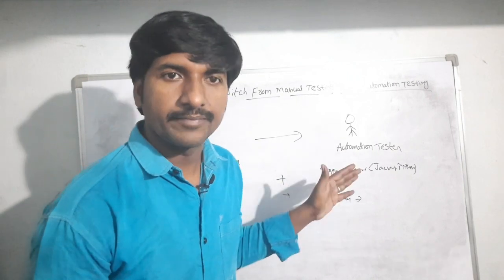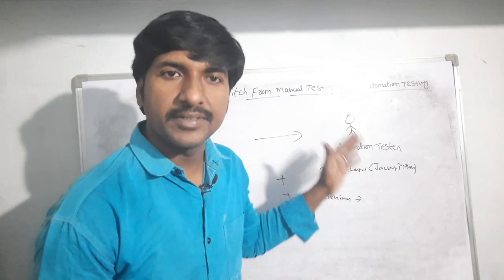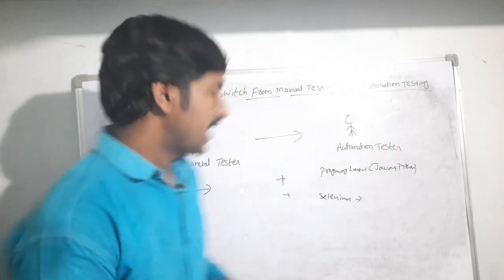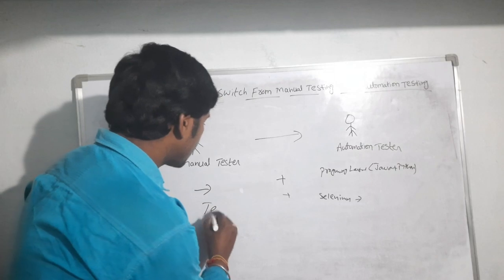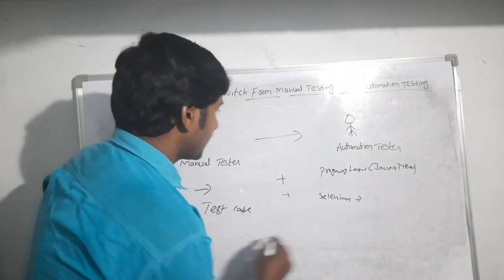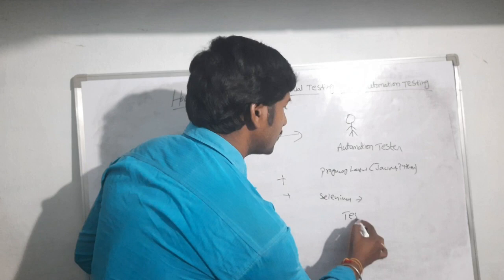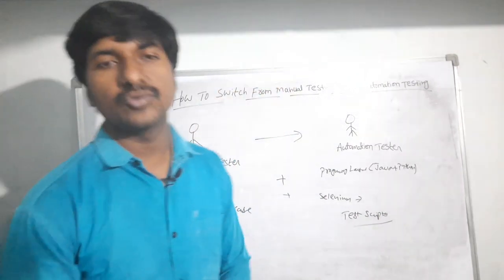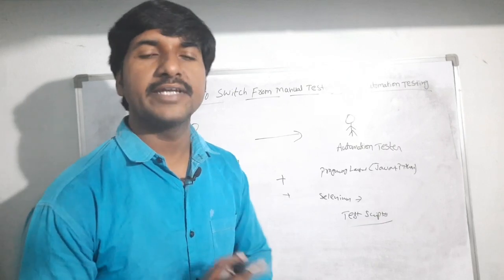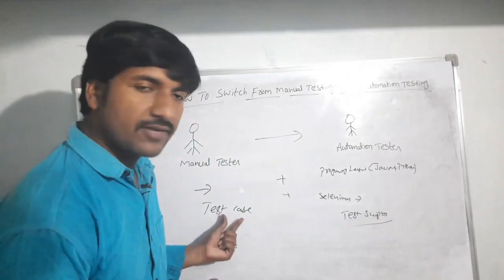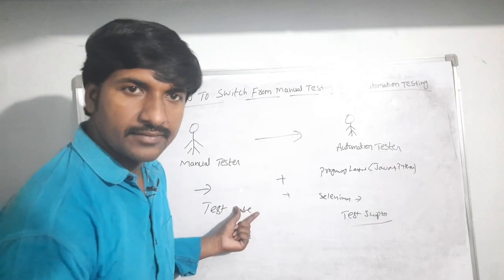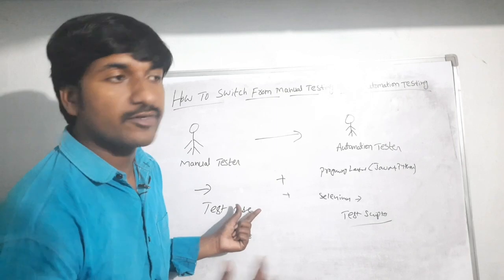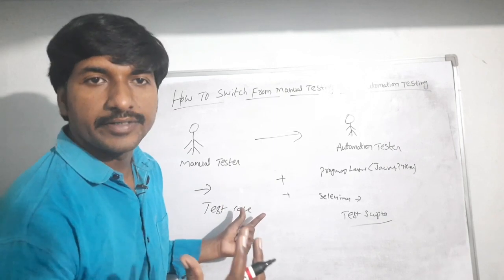The main difference between a manual test engineer and an automation test engineer is coding. As a manual tester, you write test cases. As an automation test engineer, you write test scripts using a programming language and an automation tool. Writing test cases manually is a very time-consuming process, especially when you need to repeat the test cases.